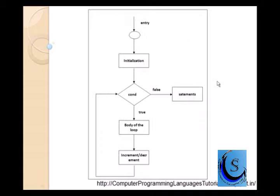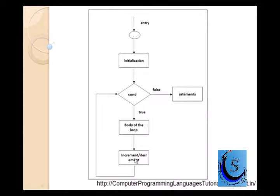Here is the diagram. First, initialization is done, then there is a condition which is checked. If it is false, then your loop gets closed. If it is true, then execute the body of the loop. After that, continue with increment or decrement, then again check the condition. This whole process goes on till the condition is true. Once the condition is false, the loop gets terminated.